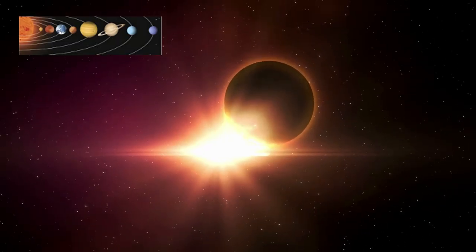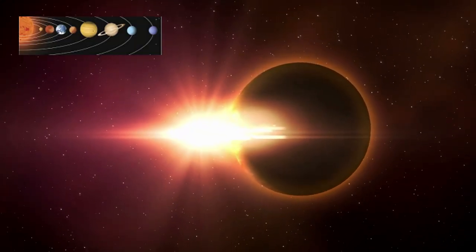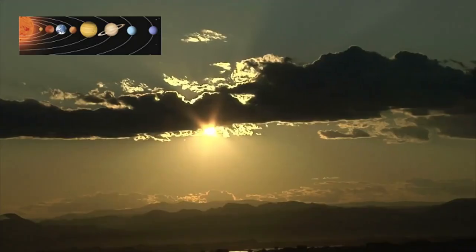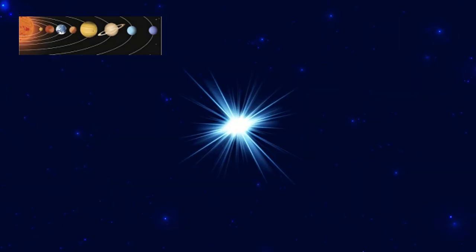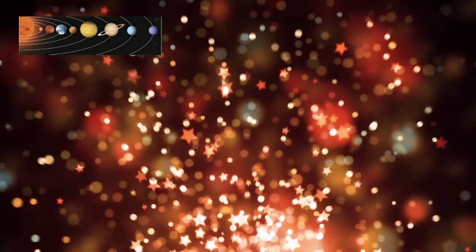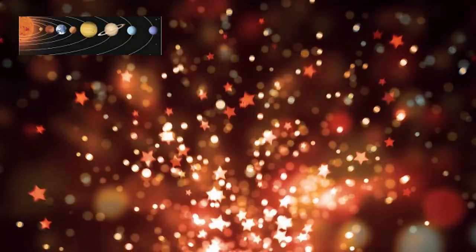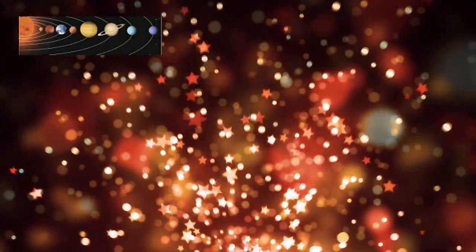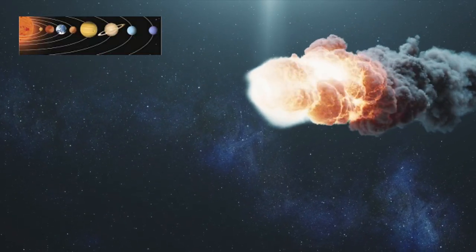A comet's closest approach to the Sun, its perihelion, is the moment it transforms from a faint icy speck into a dazzling display of glowing gas and dust. The closer the perihelion to Earth, the brighter and more spectacular the view. Brightness is measured on the magnitude scale, where lower numbers mean more brilliance. For reference, the faintest stars visible without binoculars are about magnitude 6, while the brightest comets of history have rivaled Venus at magnitude.